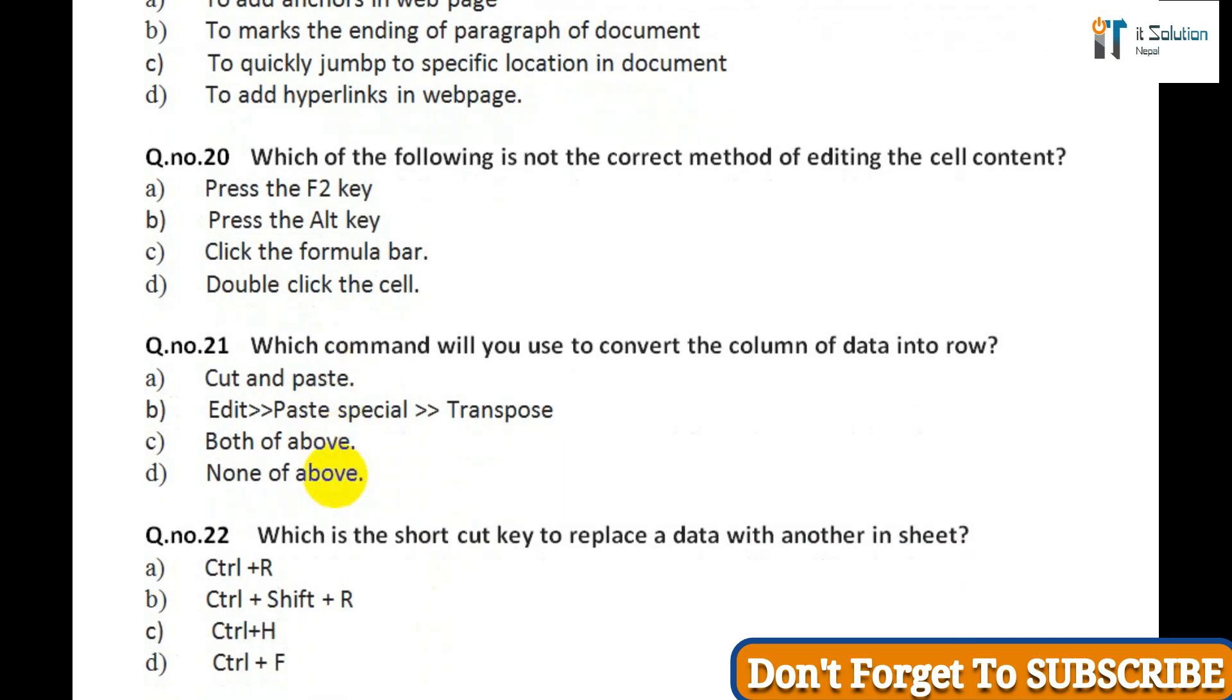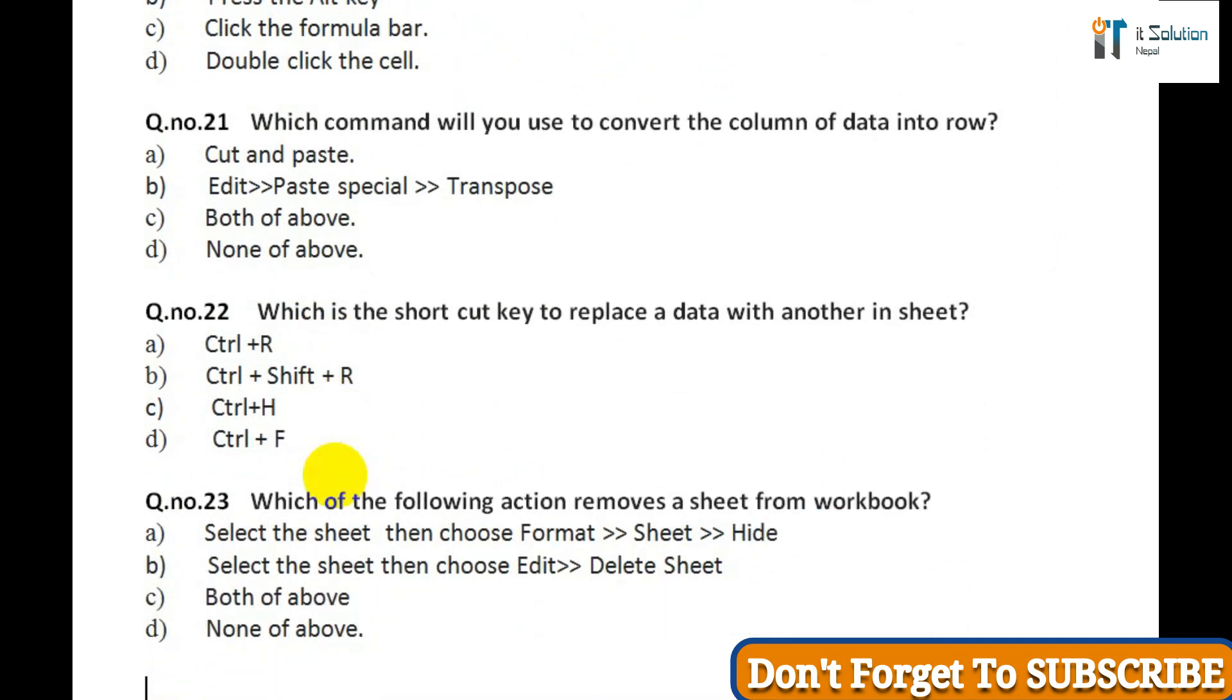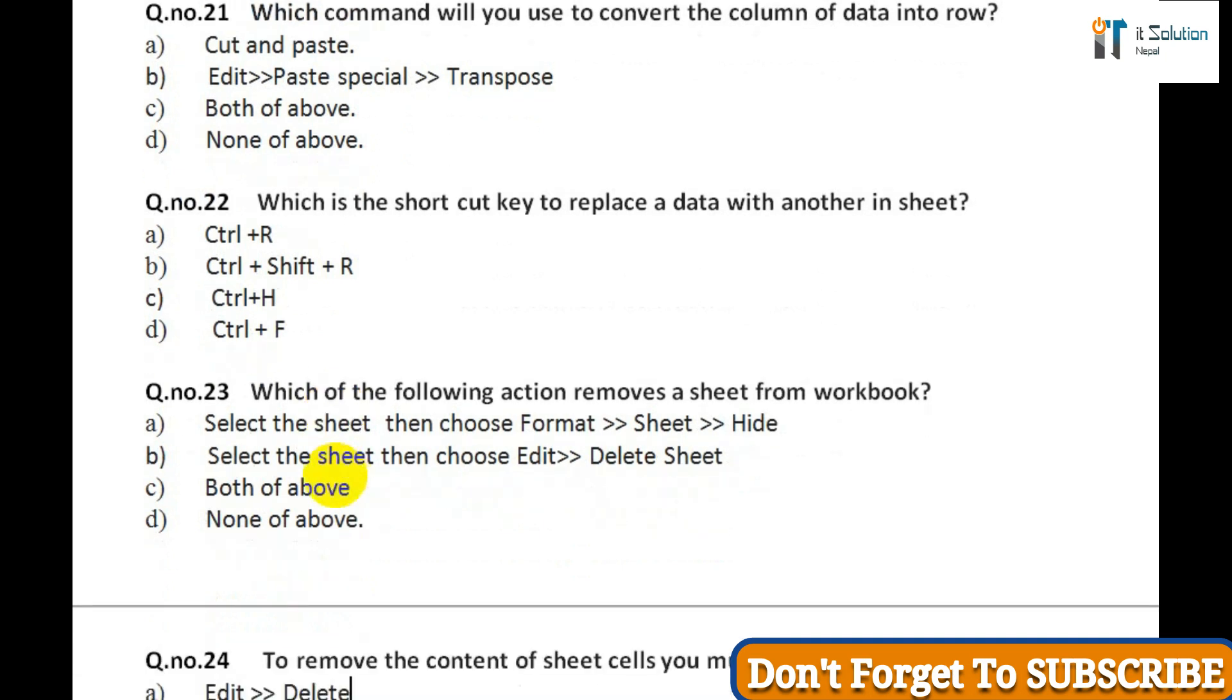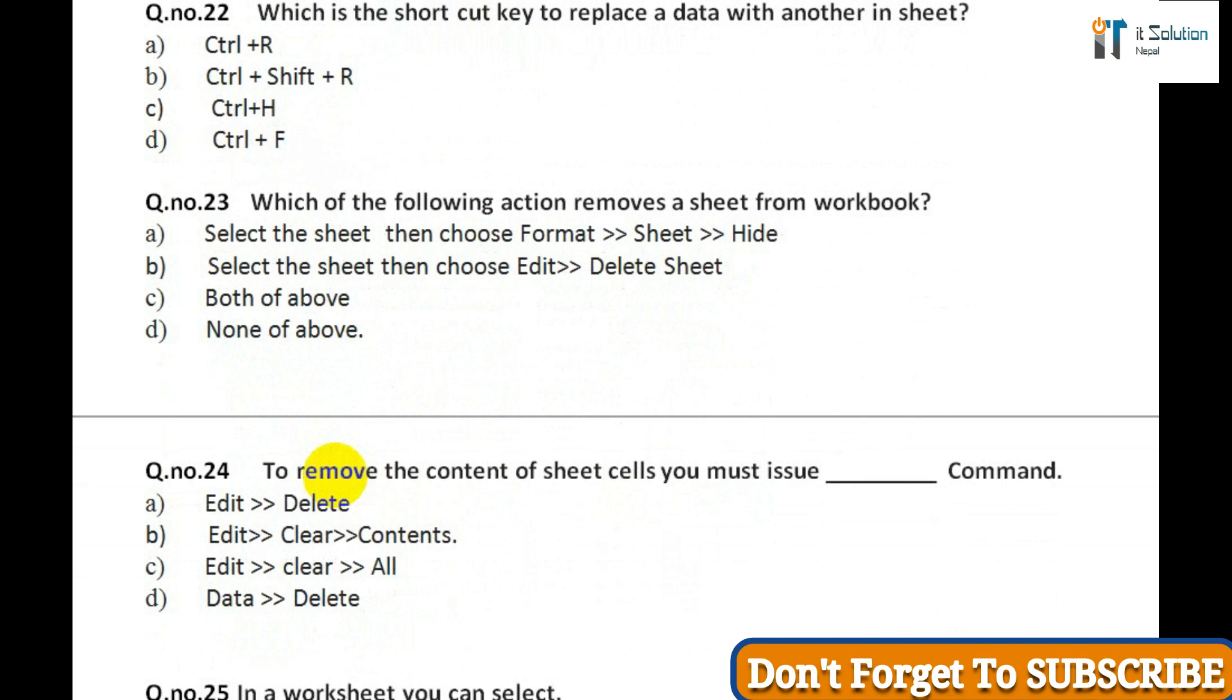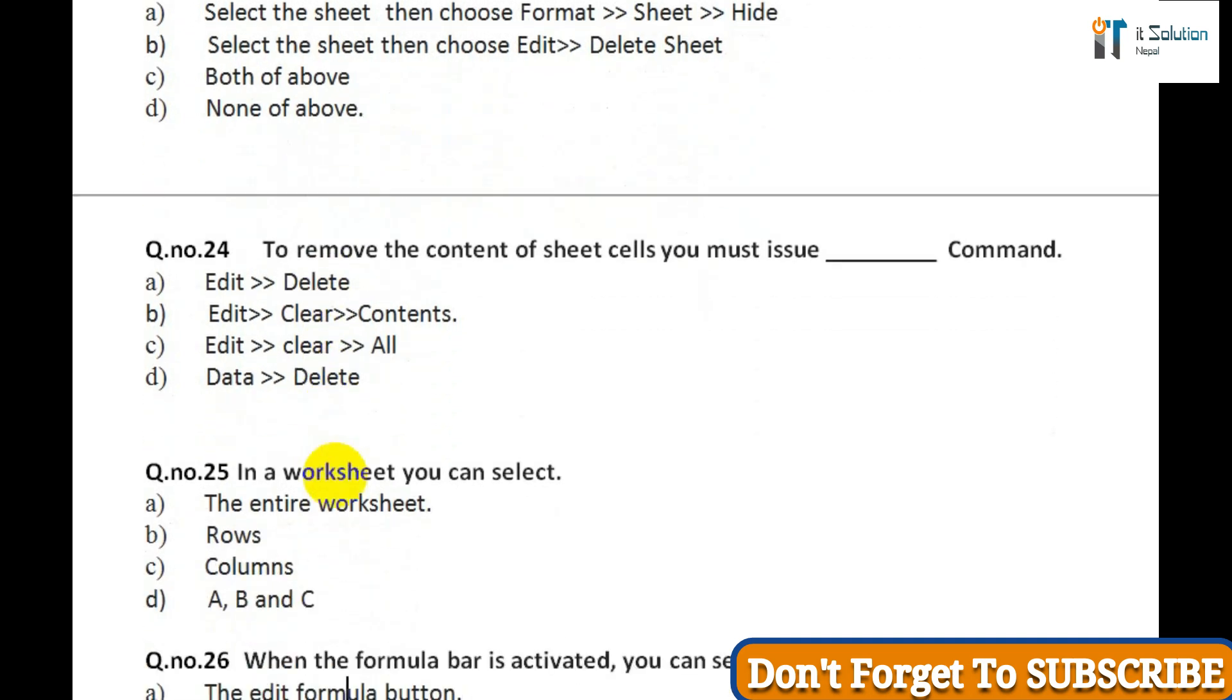Question nineteen: A bookmark is an item or location in document that you identify as name of future reference. Which of the following task is accomplished by using bookmarks? A) To add anchors in web page, B) To mark the ending of paragraph of document, C) To quickly jump to specific location in document, D) To add hyperlinks in webpage. Question twenty: Which of the following is not a correct method of editing the cell content? A) Press the F2 key, B) Press the Alt key, C) Click on the formula bar, D) Double click the cell.